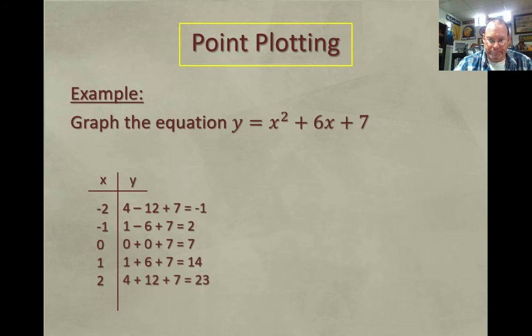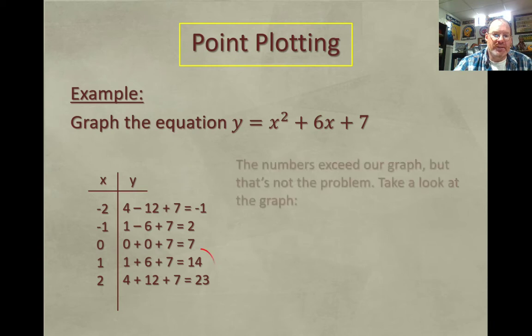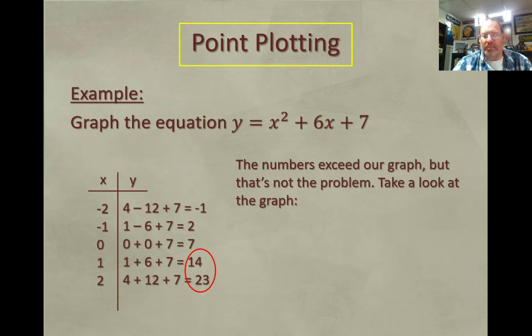And I'm going to plug and chug and get my values. Now, with the graph that I had the last time, it only went up to 10 in both the x and y direction. So as you can see, 14 and 23, they're going to go clear off the graph. So I'm either going to have to scale it in a better way, or try some other numbers. Notice that the other ones are negative 1, 2, 7, and then it starts to increase rapidly at 14 and 23. So maybe I should try some numbers below negative 2.